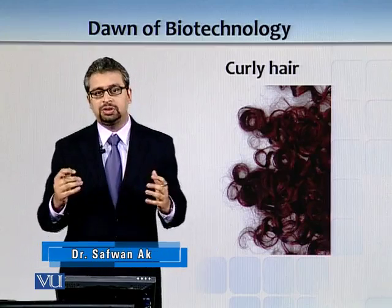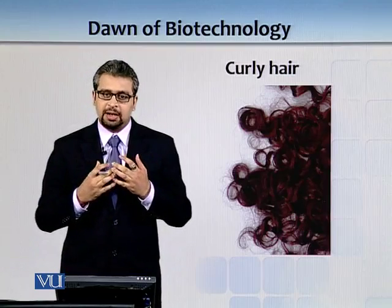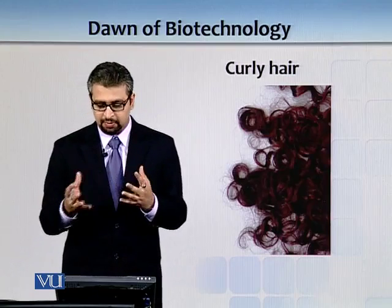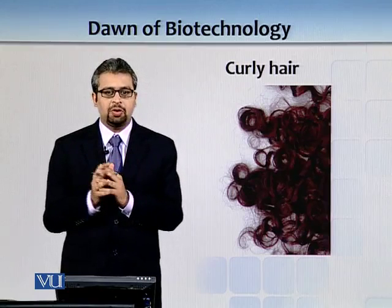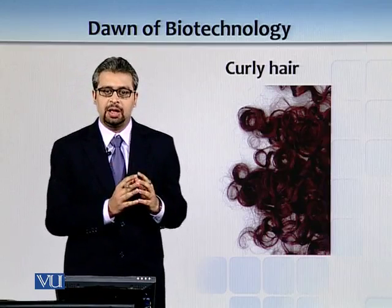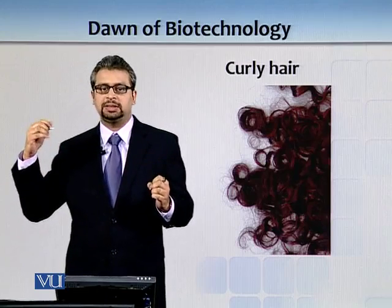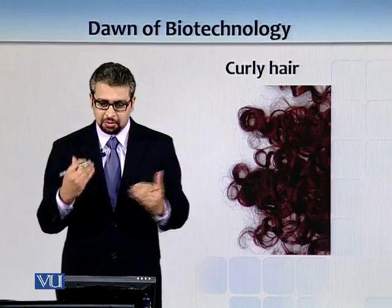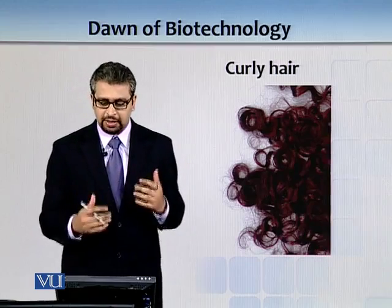People started to discuss how genes control basic traits and identified that some traits are continuous. Hair texture is a continuous trait — you can have a range. African populations have very curly hair, while others have less curly hair. People reasoned there must be two or three copies of genes controlling this variation.